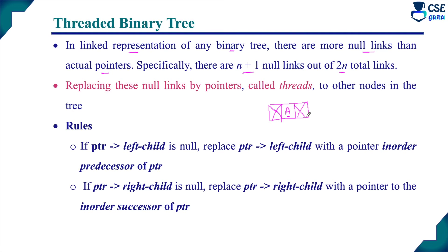These null links just occupy memory space — it is a waste of memory. Generally, there will be n+1 null links out of 2n total links. By replacing these null links with useful pointers called threads, we can make use of these null links. The representation of a binary tree with threads is called a threaded binary tree.